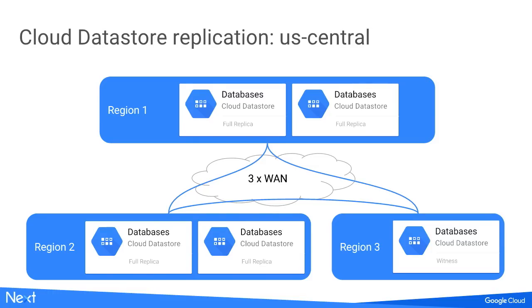Here's a simplified view of our replication topology in one of our multi-region locations — US Central. We run two full replicas in Oklahoma, two full replicas in Iowa, and a witness to act as a tiebreaker in South Carolina. To connect them, we run three independent fiber optic networks so that one can be down for maintenance, another can go unexpectedly — say, someone goes through it with a backhoe — and we still serve full production load without you noticing anything.